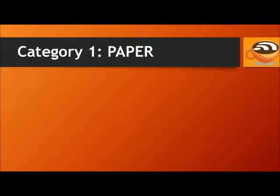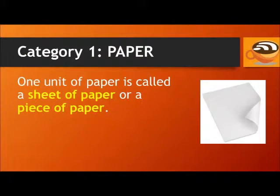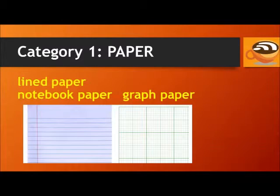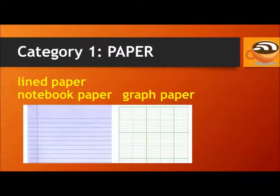Category 1 is paper, the material. One unit of paper is called a sheet of paper, or a piece of paper. If the paper has horizontal lines for writing, it's called lined paper, or notebook paper. And if it's divided into little squares, it's called graph paper.